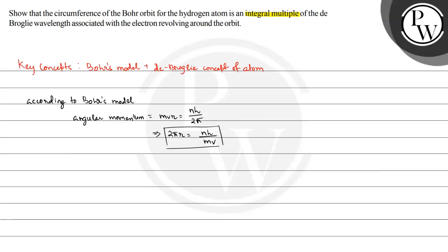And another equation is from de Broglie wavelength. So de Broglie wavelength is given as lambda equals h by mv.